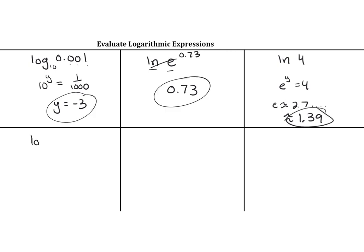Now log base 4 of negative 3. So 4 to what power equals negative 3? You cannot, if your base is positive, no exponent exists that could give you a negative number. So this is not possible. You could just write no solution.